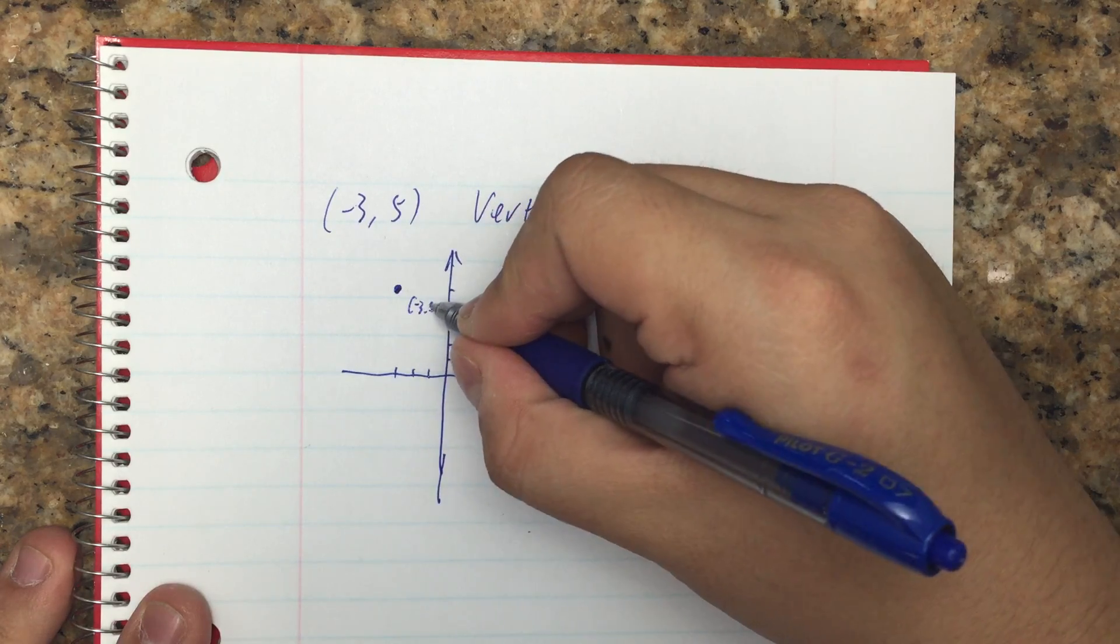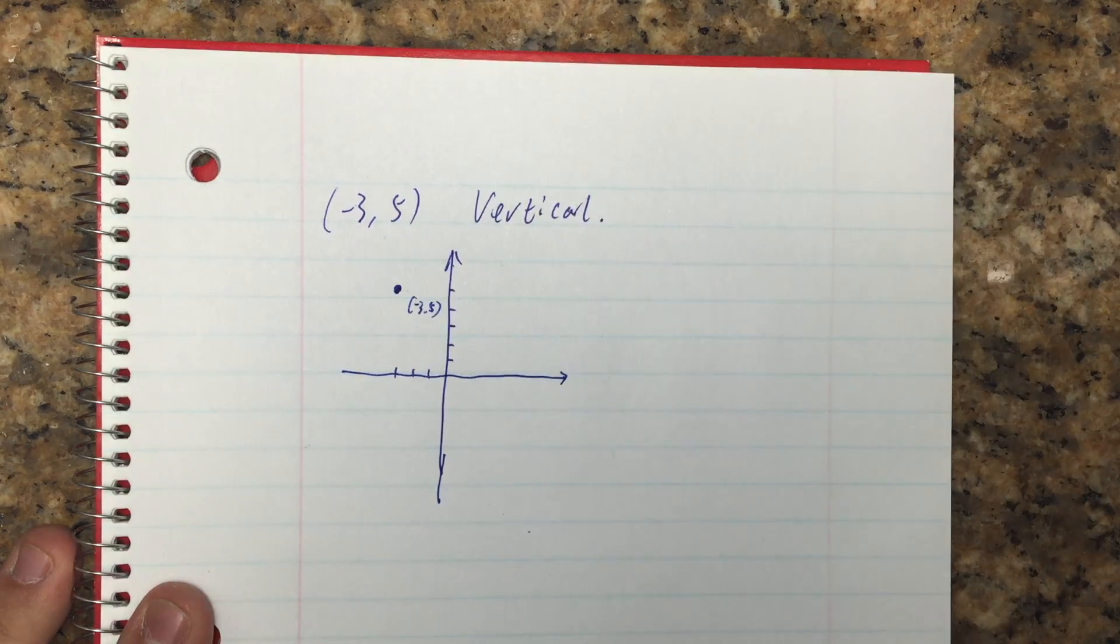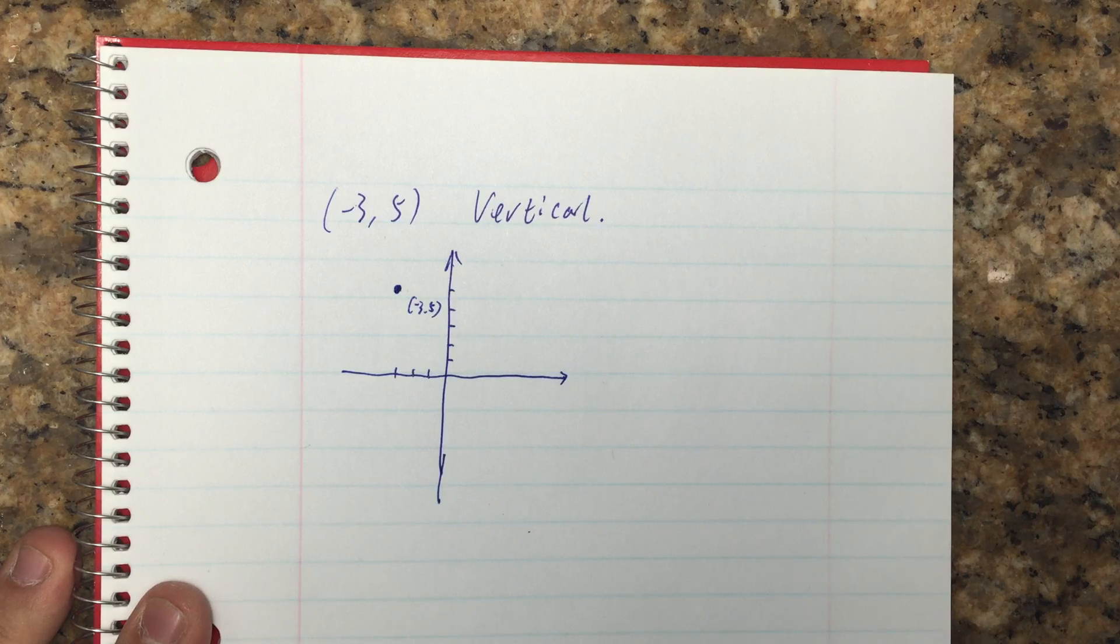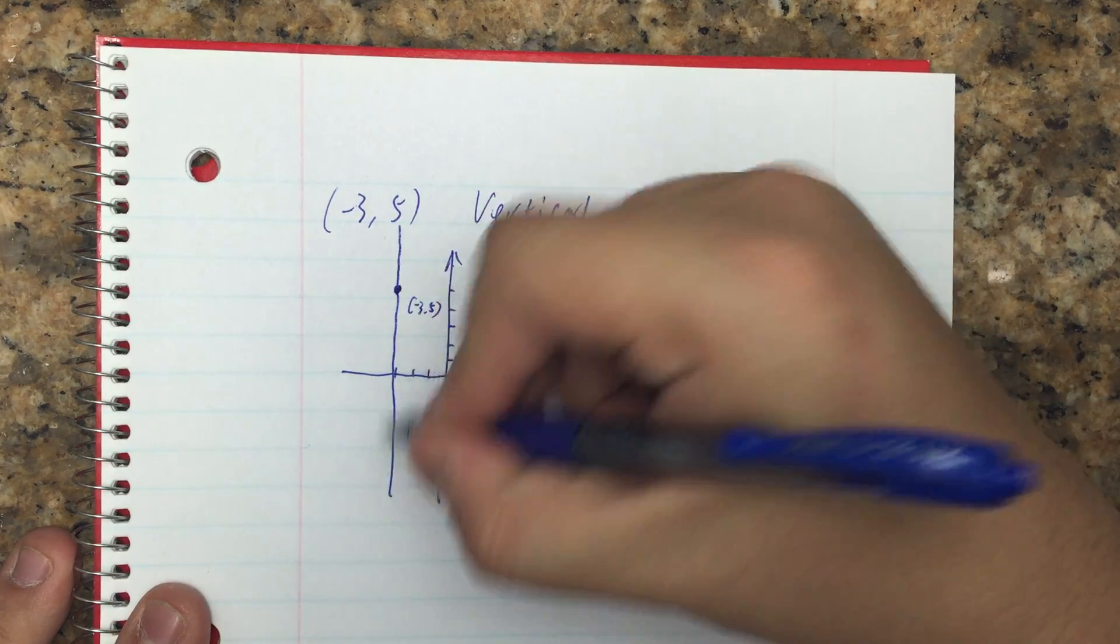And mark it (-3, 5), the point. The next step, draw the vertical line passing through this point.